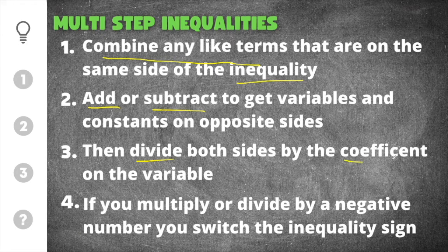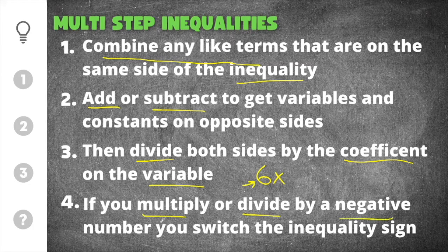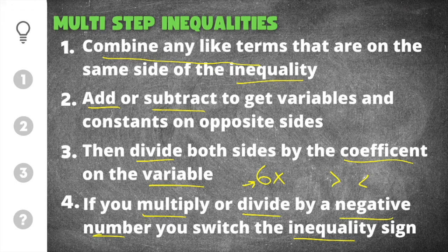Once you do that, you will divide by the coefficient on the variable. A coefficient on a variable is just the number that is attached to the variable. For example, if I had 6x, the 6 would be the coefficient on x and you're going to divide by that 6. The last thing that is unique to inequalities is that if you multiply or divide by a negative number you will switch the inequality sign. So if it's greater than it would change to less than, and if it's less than it will change to greater than — they flip flop back and forth.